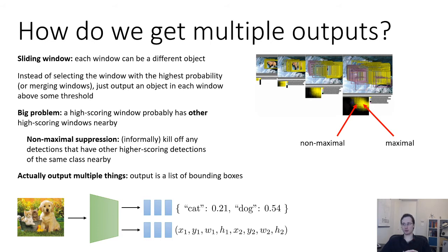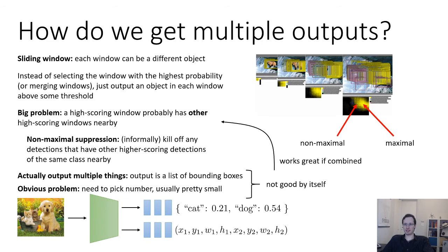Now just like with object localization, both of these ideas are reasonable on their own, but not actually all that effective. So the obvious problem with outputting multiple things is that you need to pick some number, and usually you pick a pretty small number because it's kind of difficult to train your model with a huge number of outputs. So this is not good by itself. And the sliding window is not great by itself either because you really have to get the window right. But just like with localization, these two ideas work great if they're combined.